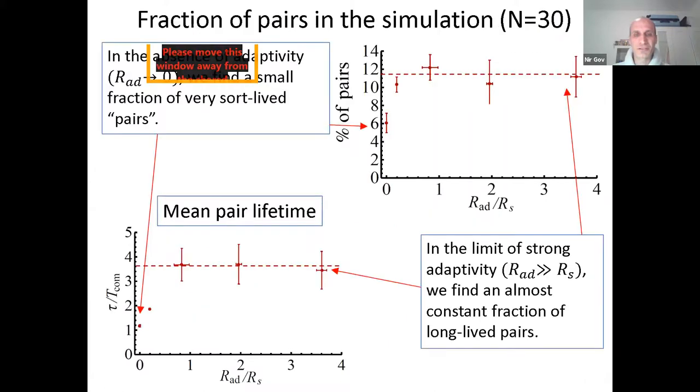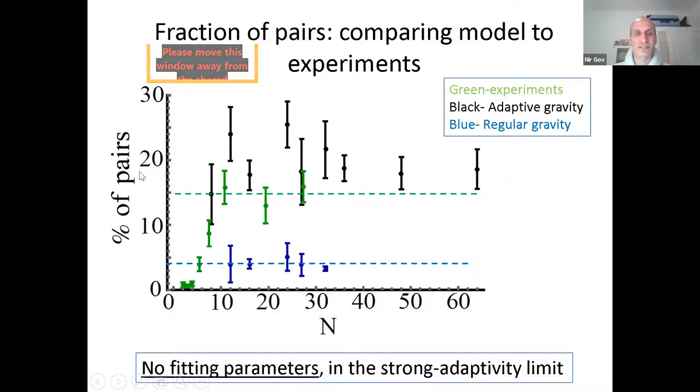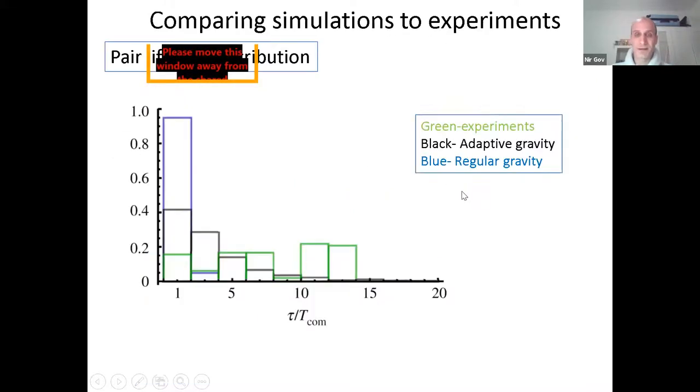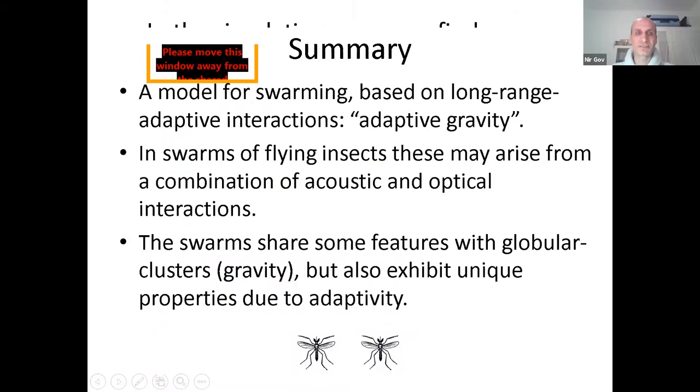And I'll even show you that quantitatively, the percentage of pairs, which is about 15% in the experiments, is actually roughly reproduced by the simulations without any fitting parameters because we're in the strong adaptivity limit. So we actually predict even a higher pairing percentage because we have no noise.